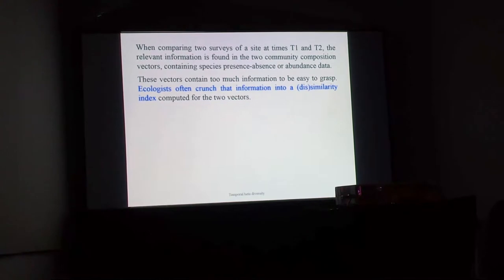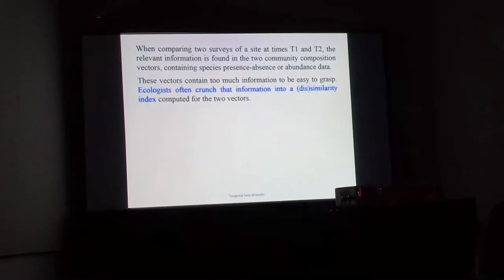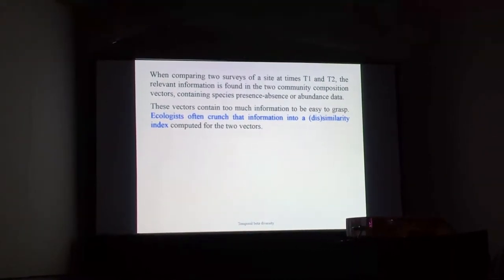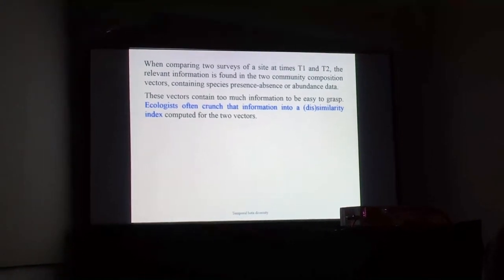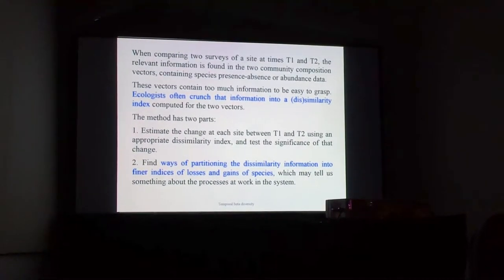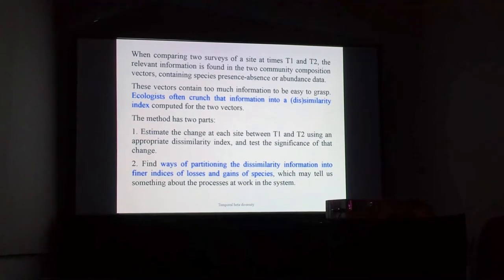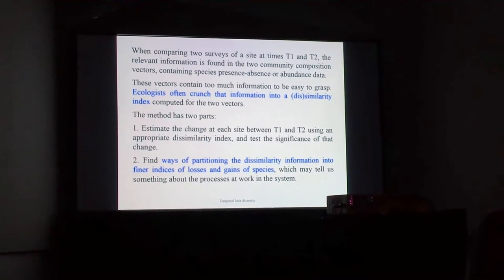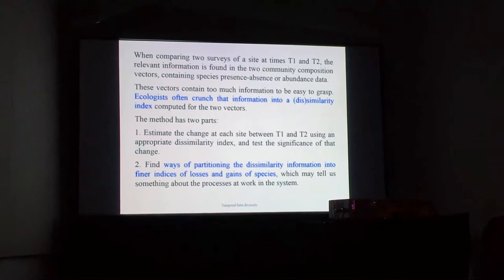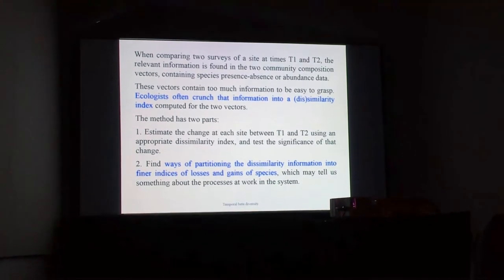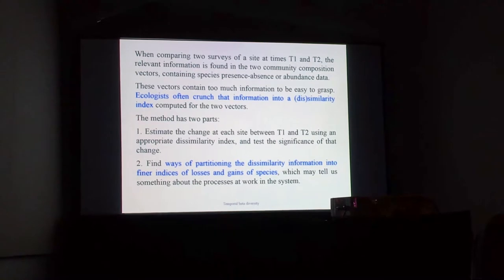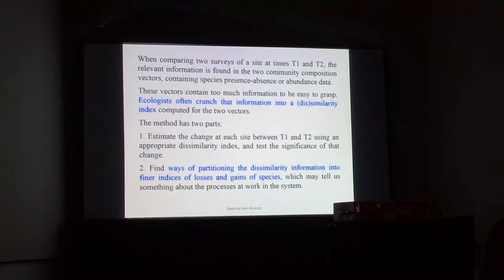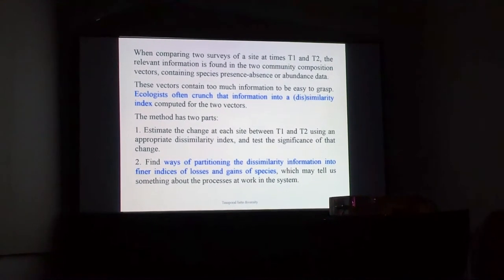These vectors contain too much information to be easy to grasp, and ecologists often crunch that information into a dissimilarity index computed for the two vectors at time one and time two. The method I'm going to describe has two parts. The first is to estimate the change at each site between time one and time two using an appropriate dissimilarity index and test the significance of that change. The second part is to partition the dissimilarity information into finer indices of losses and gains of species, which may tell us something about the processes at work in the system.